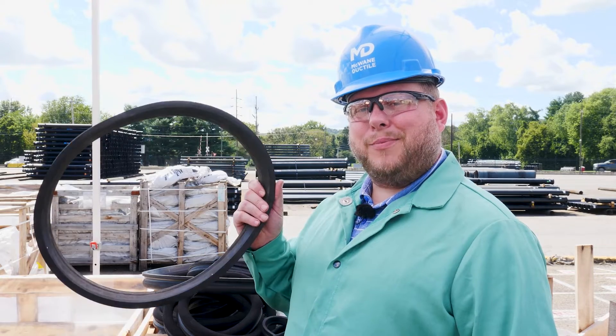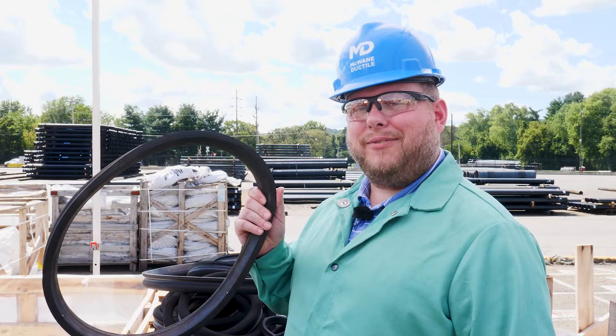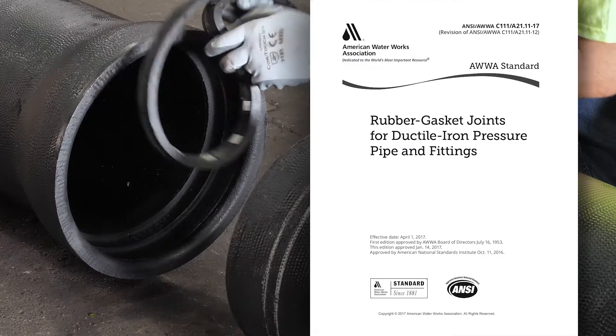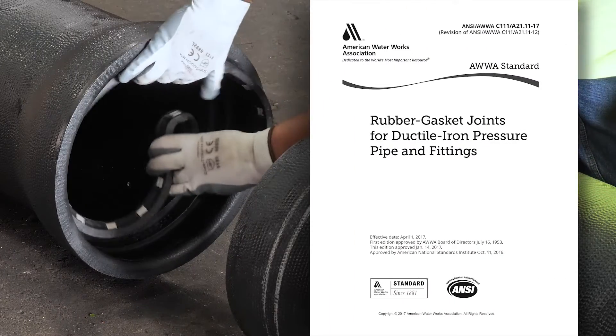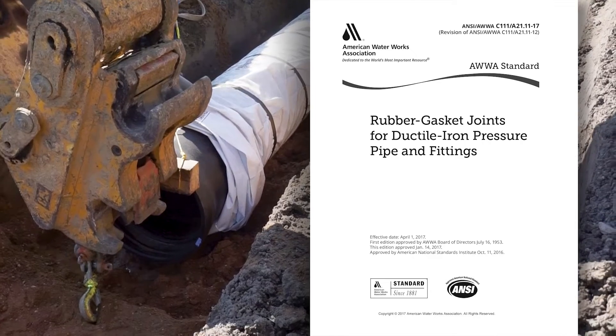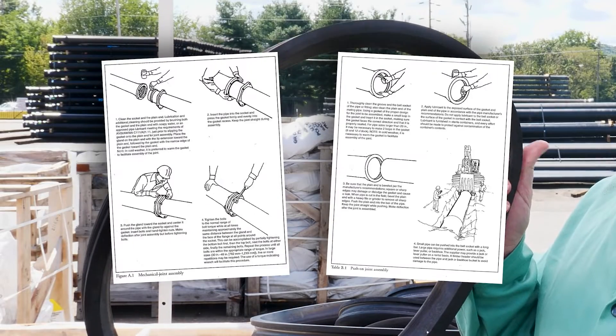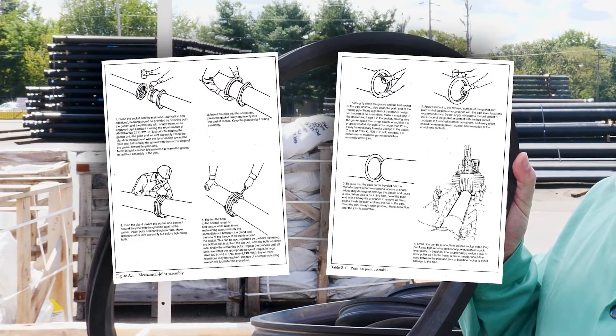Rubber gaskets for pipe joints are the subject of AWWA C111. Gaskets are placed between pipe segments at the joint and compressed, making a watertight seal. C111 also provides valuable advice on how gaskets are installed in mechanical, push-on, and flange joints. There are links to several videos demonstrating gasket installation in the description below.